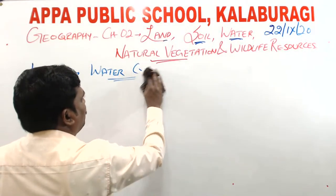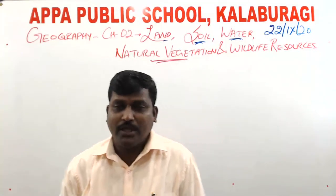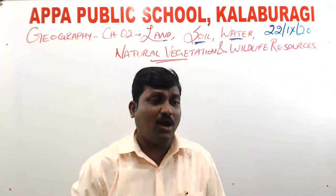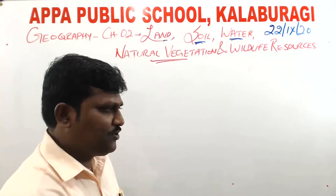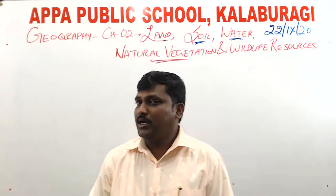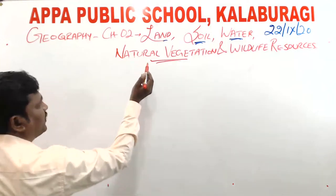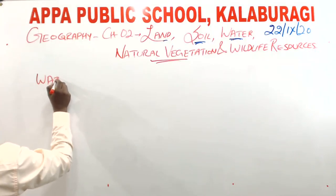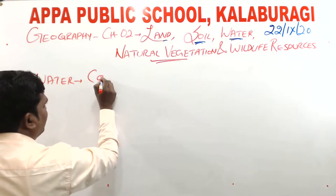Natural vegetation refers to the green grass, trees, or plants which cover the earth's surface. Now, coming to the next topic — conservation of water. The next topic in this chapter is conservation of water.